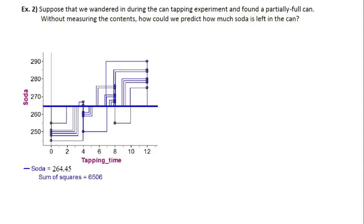Example two refers to an example from the previous notes about the can-tapping experiment. If you have a can of soda that's shaken up and you start tapping on it, hopefully the longer you tap on it, the less amount will explode out of the can, and you'll actually have more soda left. So the longer you tap on it, the more soda gets left, and we did that in previous notes.